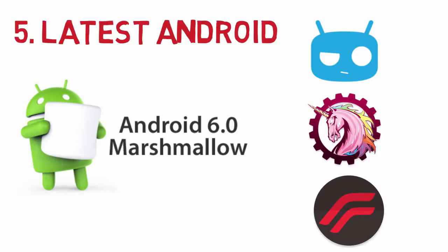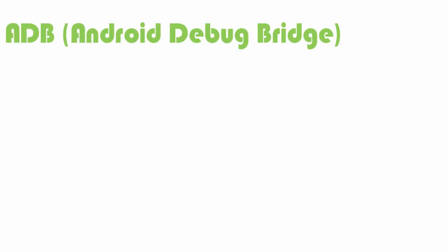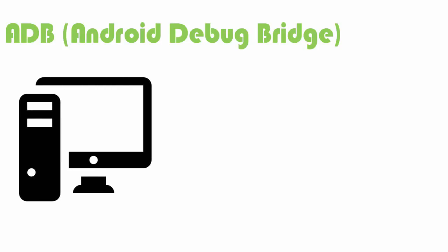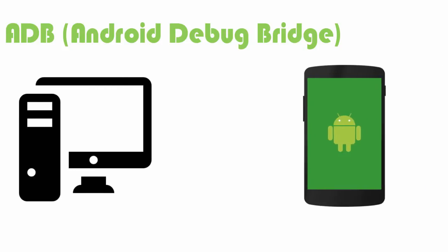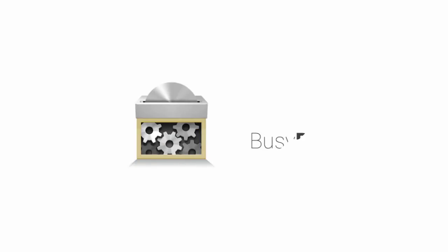Now let's understand the most commonly used terms. ADB, Android Debug Bridge — this is provided by Google for communication between a computer and an Android device over USB or Wi-Fi. BusyBox in Android is something you install on your phone to provide some additional Linux and Unix commands.